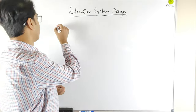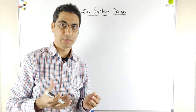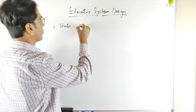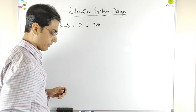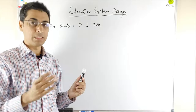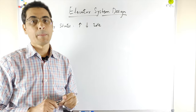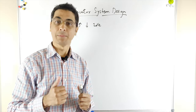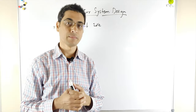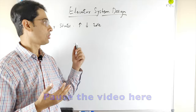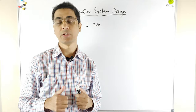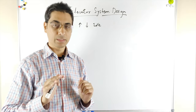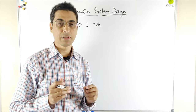The first requirement is that the elevator car has three states: it can go up, go down, or be idle. We will represent these states using an enumeration. A question to consider: in my previous video I said not to use enumeration for parking lot types, but here I'm recommending it for elevator states. I'll explain why later. The second requirement is that the elevator can transfer passengers from one floor to another.